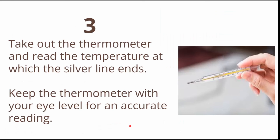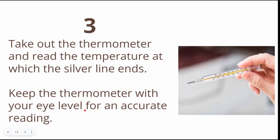Third, take out the thermometer after two minutes and read the temperature at which the silver line ends — you can see the silver line rising when you take the temperature, and you read where the line ends. Remember to keep the thermometer at your eye level when taking the reading for an accurate result.